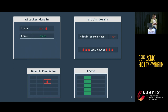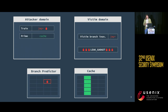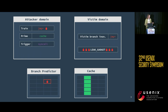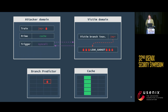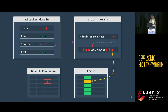which maps to the same branch predictor entry as the branch in the victim domain. Once they've done that, they can prime some shared resource like the cache, and then trigger the victim. If the victim is the kernel, then we have a syscall, and when the victim branch is reached, we get this misprediction that transiently executes the leak gadget, which encodes some secret into the cache that the attacker can later infer.